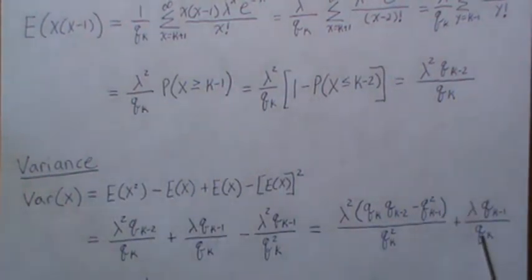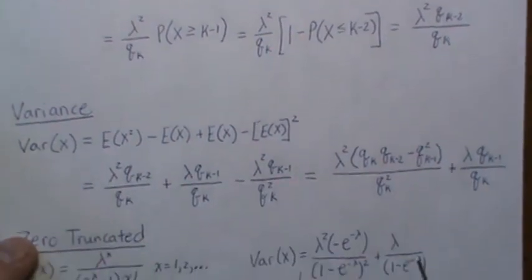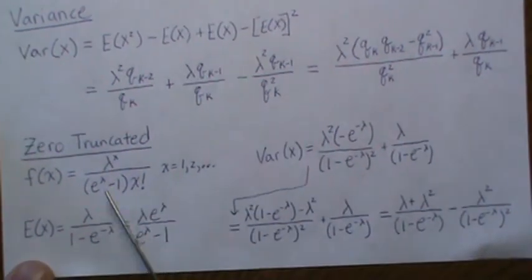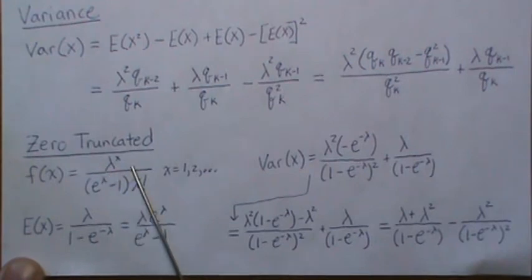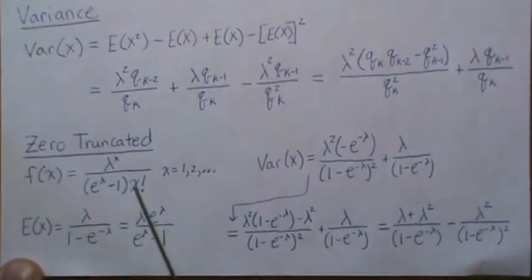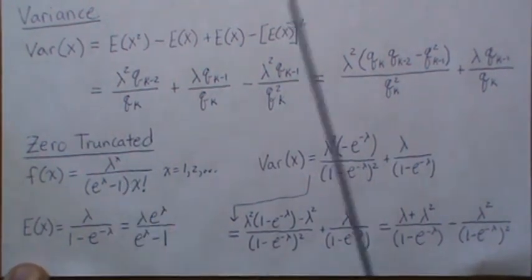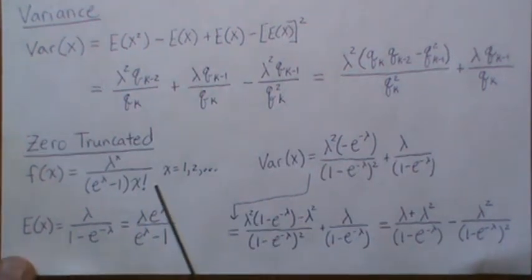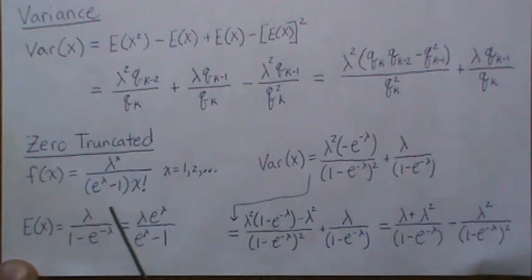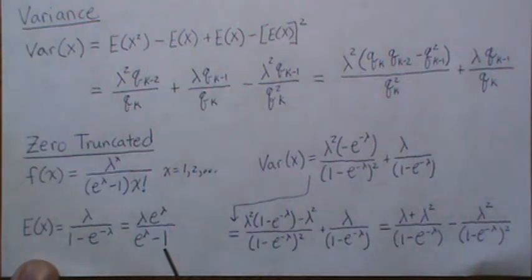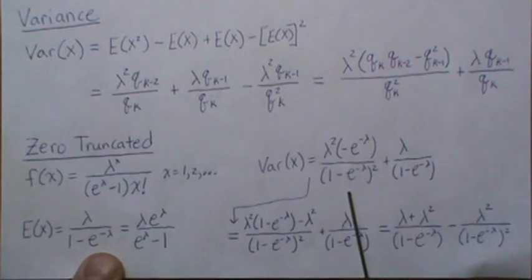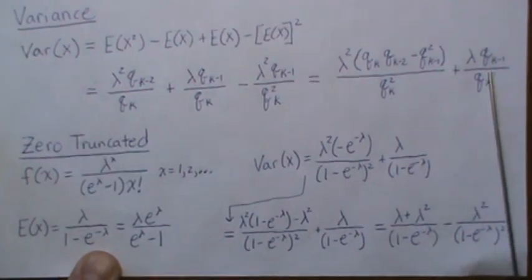In the literature you often see the zero-truncated Poisson. When you plug k=0 into the PDF formula, the e terms cancel and you get a recognizable form. For the mean, our formula gives one result, but if you multiply by 1 in the form of e^lambda / e^lambda, you get the version usually reported as the mean of a zero-truncated Poisson.